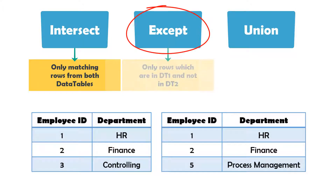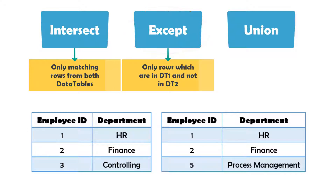Except — with this function you get all rows that exist in the first table but not in the second table. For example, from the tables shown we only get the third row from the first table as a result.